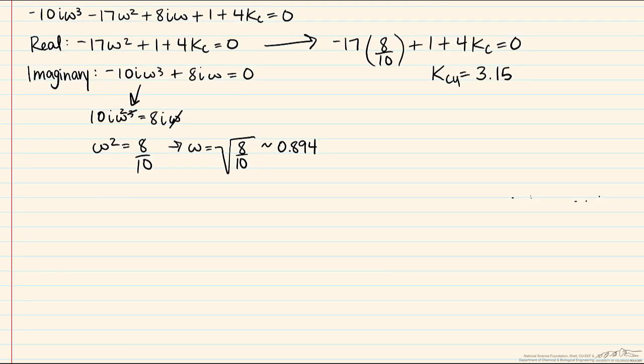Now in order to find the ultimate period we take advantage of the relationship between the ultimate gain and the ultimate frequency, which is 2 pi over omega, so this will be 2 pi over about 0.894, which will be 7.03, and this will have units of minutes because of the fact that our time constants had units of minutes.